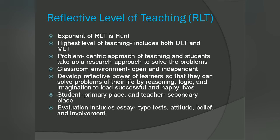Reflective Level of Teaching, RLT. The exponent of RLT is Hunt. It is the highest level of teaching because it includes both ULT and MLT. It is a problem-centric approach of teaching, and students take up a research approach to solve their problems. The classroom environment is open and independent. It helps to develop reflective power of learners so that they can solve problems of their life by reasoning, logic and imagination, to lead successful and happy lives. In RLT, the student occupies the primary place whereas the teacher occupies the secondary place. Evaluation includes essay type tests, attitude, belief and involvement.